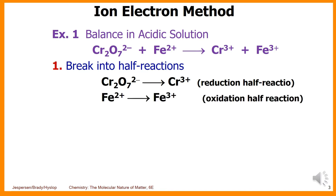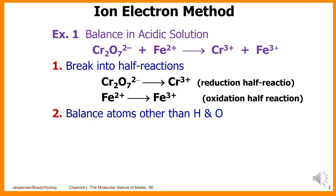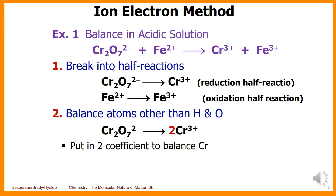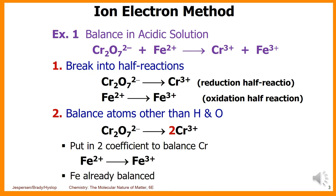And Fe²⁺ goes to Fe³⁺, which is the oxidation half-reaction. Step two: balance atoms other than hydrogen and oxygen. Here we put a coefficient of two to balance Cr³⁺, and Fe is already balanced.